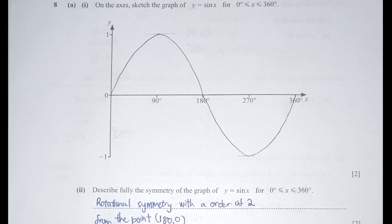For question 8A part 1, illustrating Y equals sine X is pretty straightforward. For describing the symmetry of the graph Y equals sine X, this question is looking for rotational symmetry. Setting the center point at (180°, 0), the graph has rotational symmetry of order 2 because when flipped 180 degrees and 360 degrees it returns to the same position.